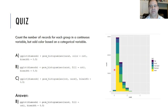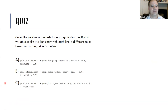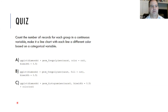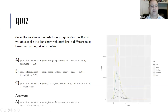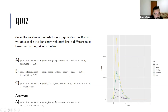Last question: count the number of records for each group in a continuous variable, but make it into a line chart. When we talk about counting the number of records for each group in a continuous variable that's a clue for histogram, but we want to make it into a line chart — so that changes over to a frequency poly.